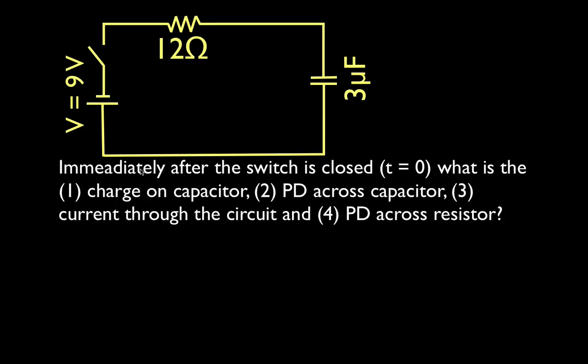One is immediately after the switch has been closed, which we often call time equals zero. I think of it not really as time equals zero — it's right after the switch has been closed, so it's a fraction of a second or a very small amount of time. What does this circuit look like right after the switch has been closed? We want to know the charge on the capacitor, the potential difference across the capacitor, the current through the circuit and resistor, and the voltage drop across the resistor.